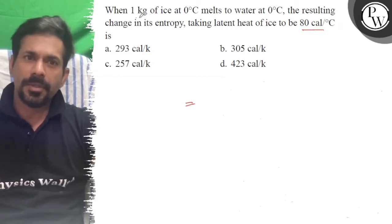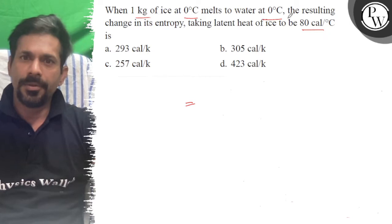So we have here: 1 kg of ice at 0 degree Celsius melts to water at 0 degree Celsius.